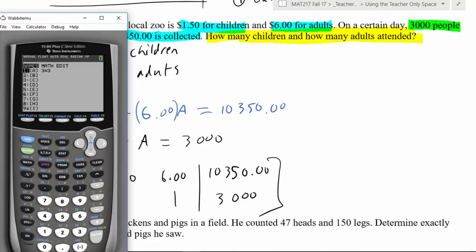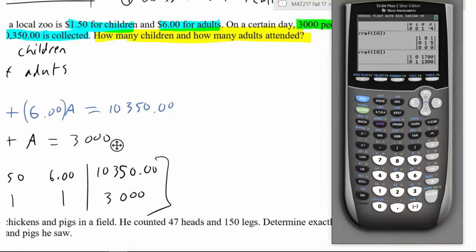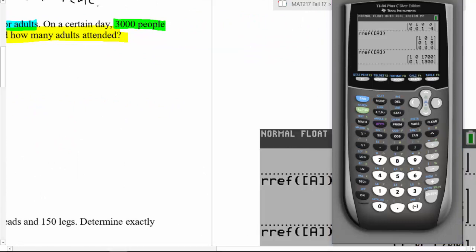Okay, so now we're going to go into our matrix, we're going to go edit. This is a 2 by 3, and what were our numbers? I'll move this to this side, 1.5, 6, 10,350, then down here it is a 1, a 1, and 3,000. So now double check your numbers, because there's nothing worse than thinking you did it right and you just typo'd, you missed a number, you missed a zero, something goofy happened. So now I'm just going to hit enter for reduced row echelon form, and it spits out a nice beautiful number for us.